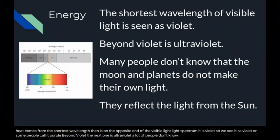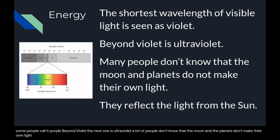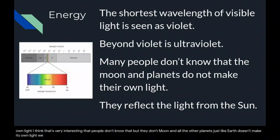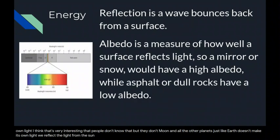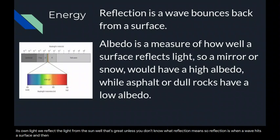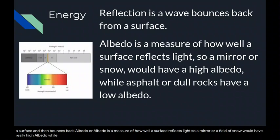A lot of people don't know that the moon and the planets don't make their own light. The moon and all the other planets, just like Earth, don't make their own light — we reflect the light from the sun. Reflection is when a wave hits a surface and then bounces back. Albedo is a measure of how well a surface reflects light. A mirror or a field of snow would have really high albedo, while something like asphalt or dull rocks would have a really low albedo because they don't reflect a lot of light.